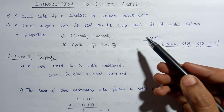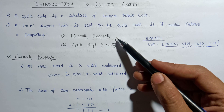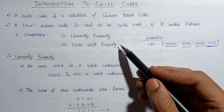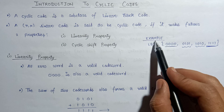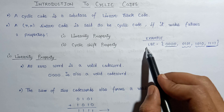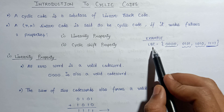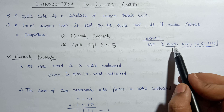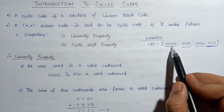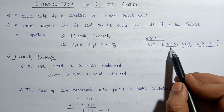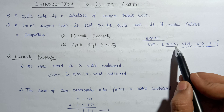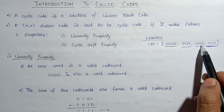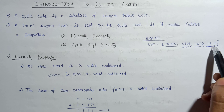Before understanding the linearity property and cyclic shift property, let us have a look at the given example. Here is a linear block code consisting of four codewords: 0000, 0101, 1010, and 1111.